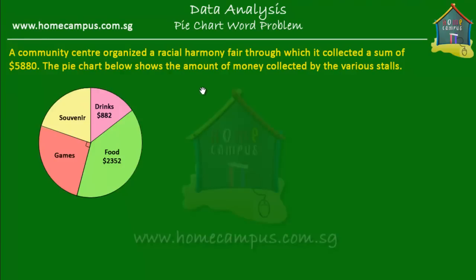Welcome to homecampus.com.sg. Let's solve this word problem on pie charts. A community center organized a racial harmony fair through which it collected a sum of $5,880. The pie chart below shows the amount of money collected by the various stalls.